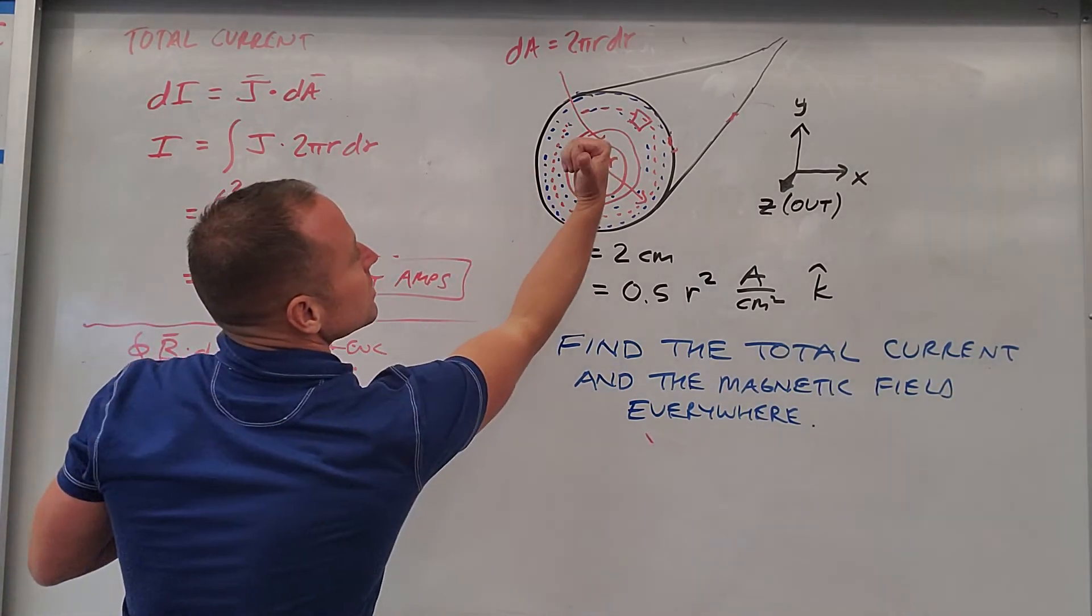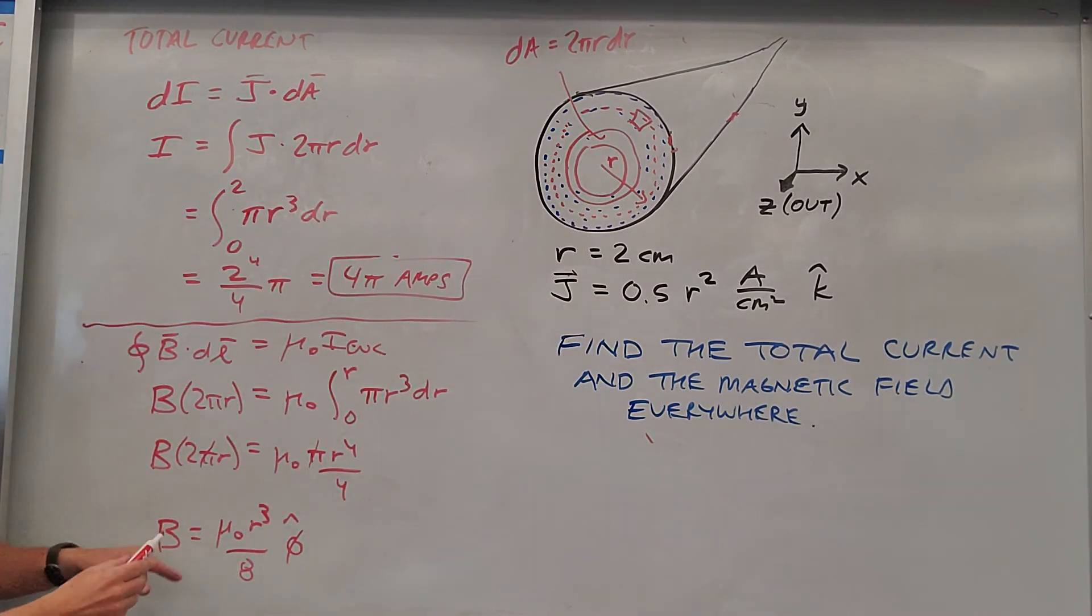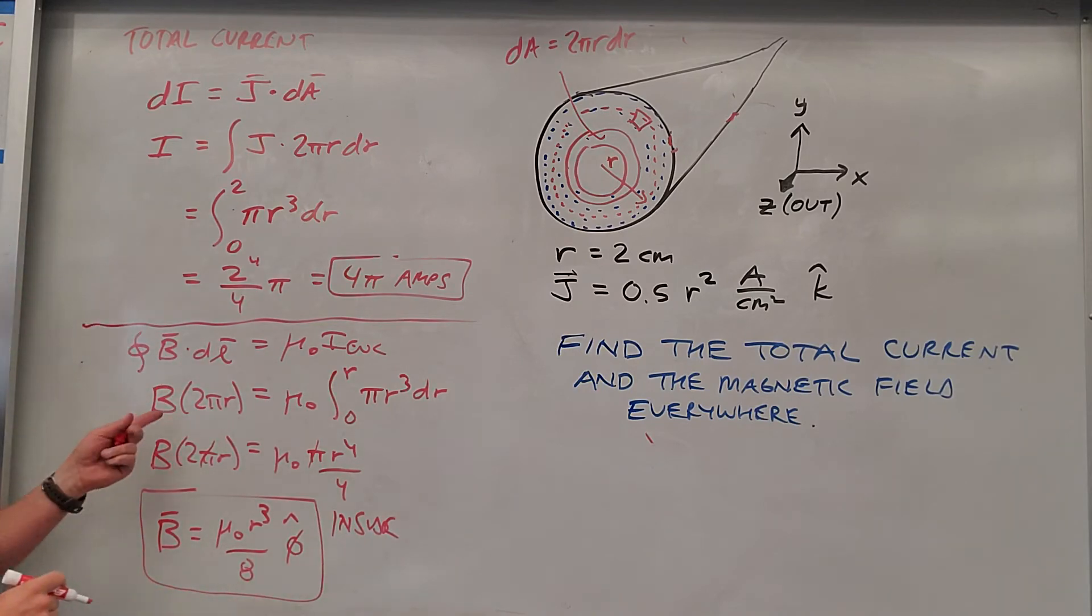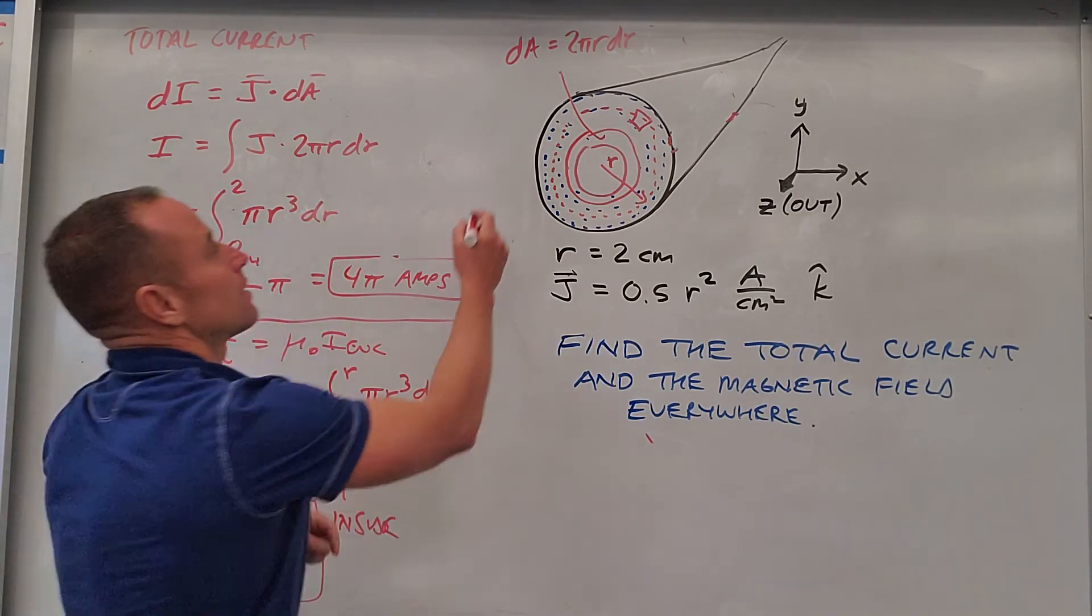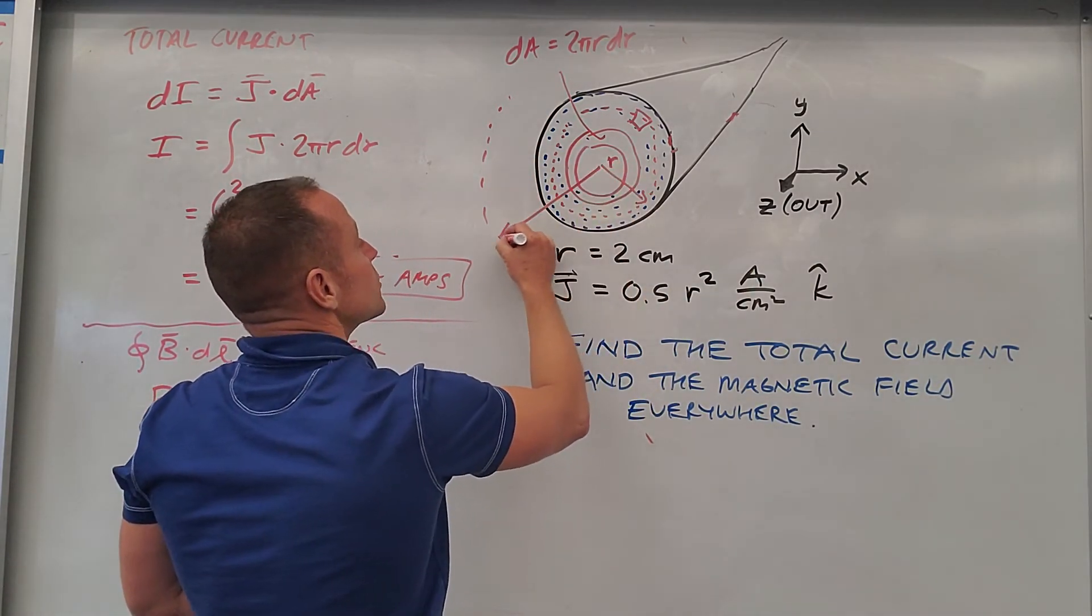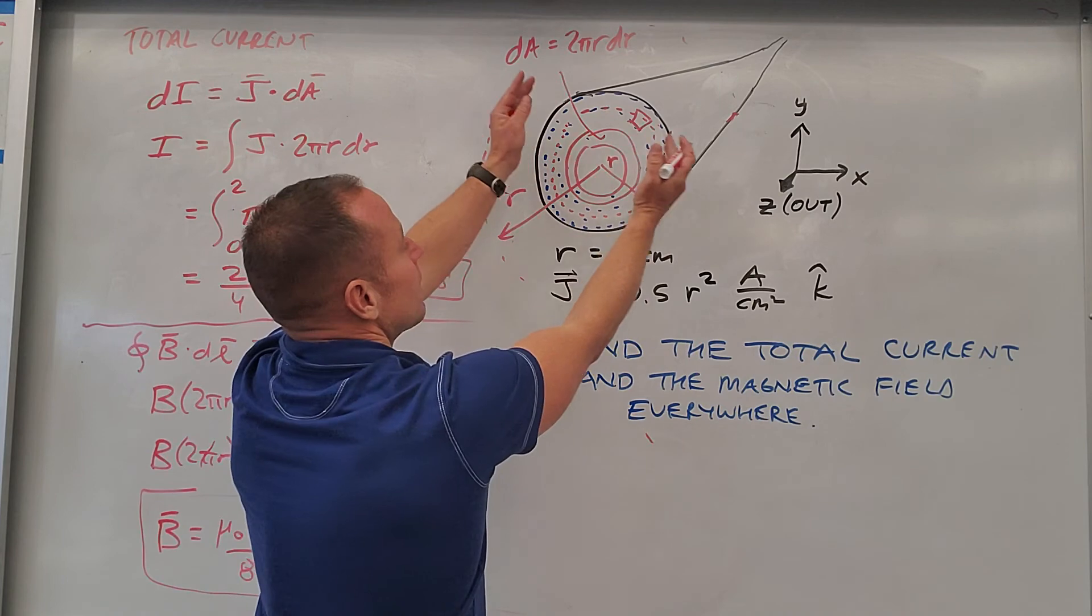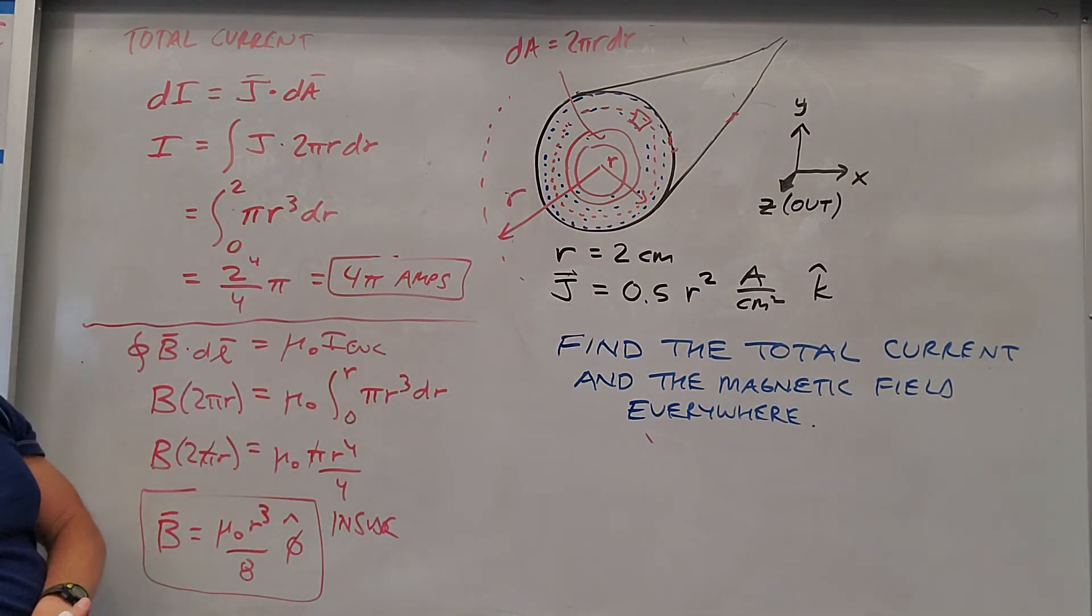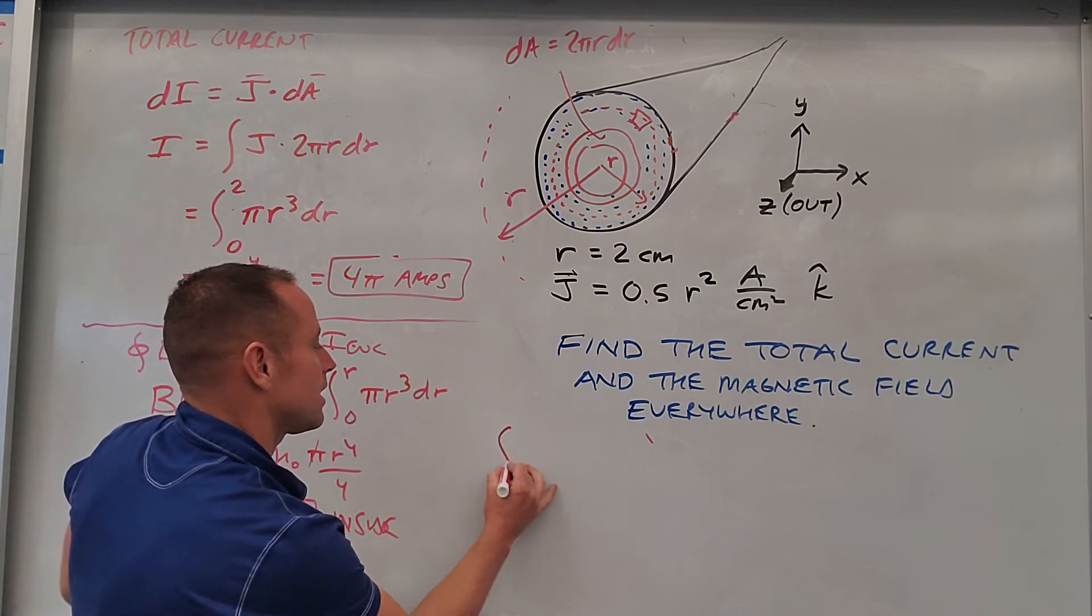Because it's in the phi hat direction just because it's coming out at us. So there's our magnetic field inside. Outside's incredibly similar, except for we just need the entire current, so you'd make your Amperian loop out here, at an arbitrary R outside. We would just need to calculate how much current is inside, but we've already done that. We know that there's 4 pi amps in there.